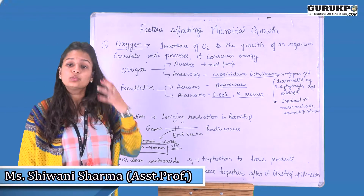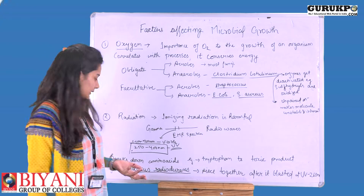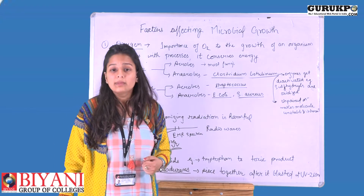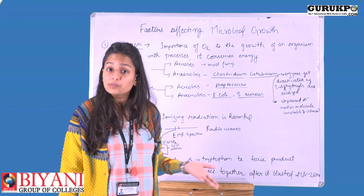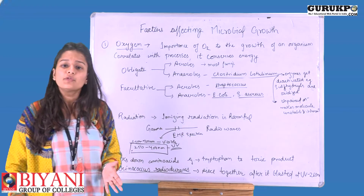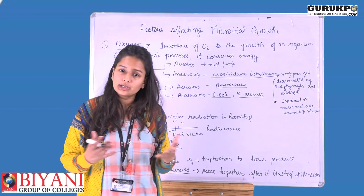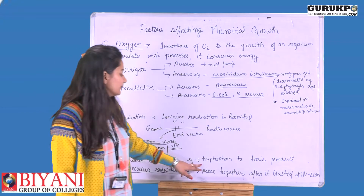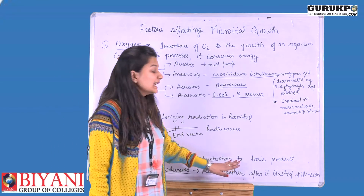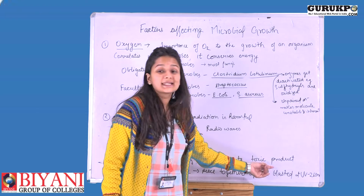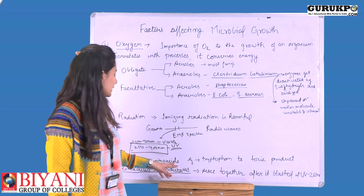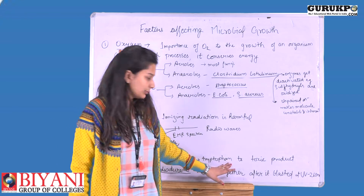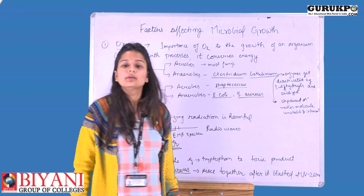UV radiation affects microorganisms by breaking down amino acids which are present in the microorganism or which lead to protein formation. If proteins are not formed, the microorganism will be killed. For example, UV radiation changes tryptophan into a toxic product in microorganisms, and that toxic product leads to the death of the microorganism.